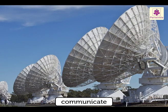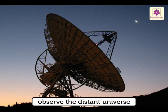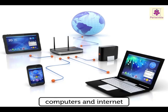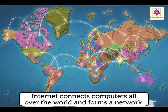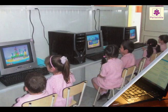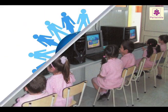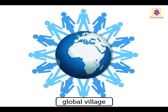Artificial satellites also help us communicate and even observe the distant universe. Computers and the internet have made communication quick and efficient. The internet connects computers all over the world and forms a network. We use the computer to send emails, and a lot of information is now on our fingertips because of the internet. It is because of these modern means of communication that the world is called a global village.